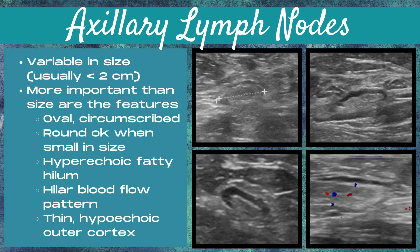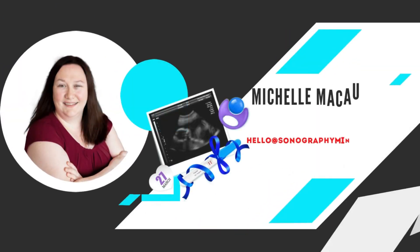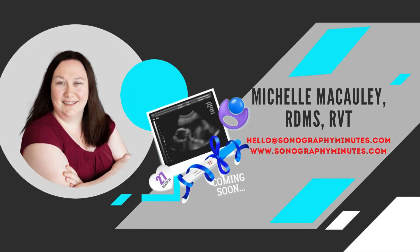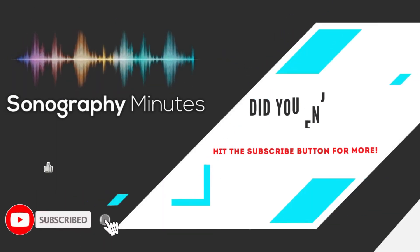Sometimes with axillary lymph nodes, it's very hard to appreciate that thin hypoechoic outer cortex because the hilum either goes all the way to the edge of the cortex and you can't see it at all, or it's just a very thin rim of that outer hypoechoic cortex.